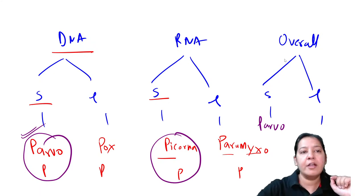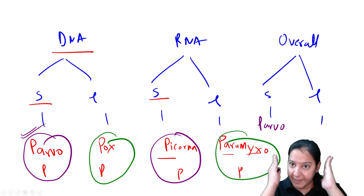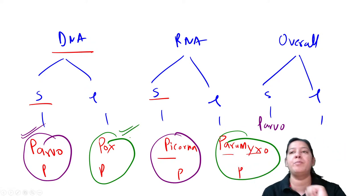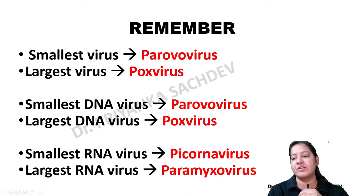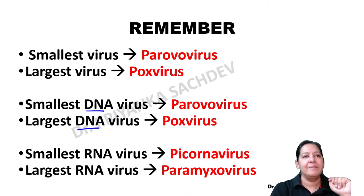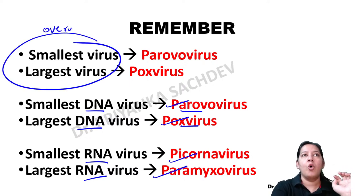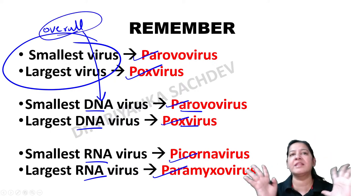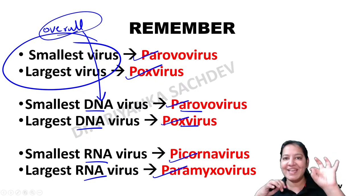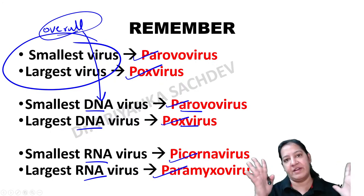The summary: among DNA, smallest and largest are Parvo and Pox. Among RNA, smallest and largest are Picorna and Paramyxo. Overall smallest is Parvo, overall largest is Pox - both are DNA. Now a question: 'Smallest DNA virus?' Options: Herpes, Adeno, Parvo, Pox. Correct answer is C - Parvo. If asked largest DNA, answer is D - Pox. If question says 'smallest genome' without specifying DNA or RNA, the answer is overall smallest - Parvo.